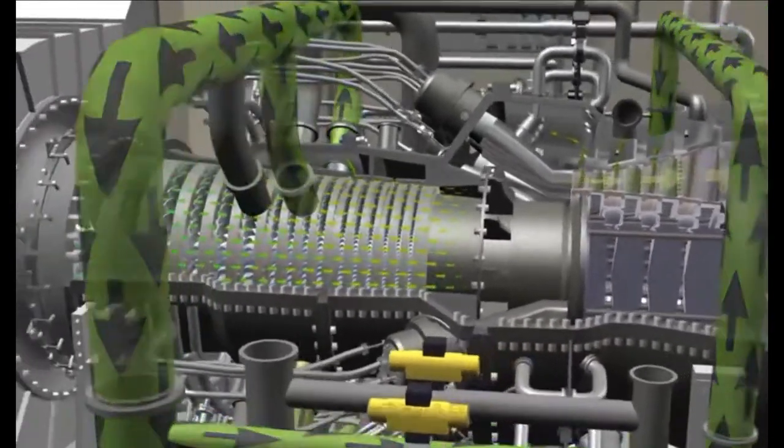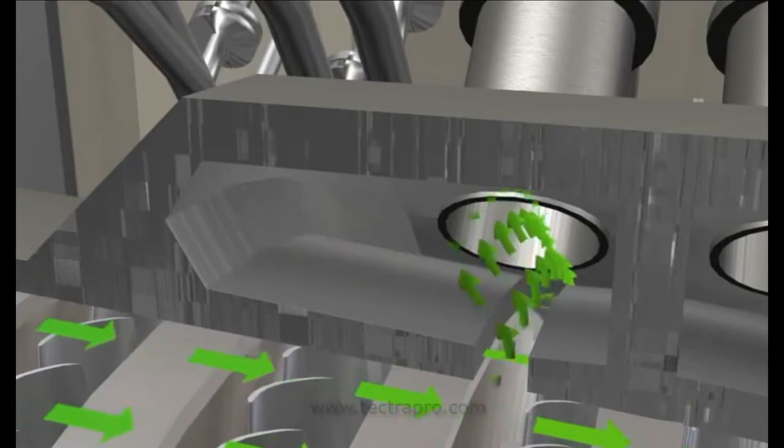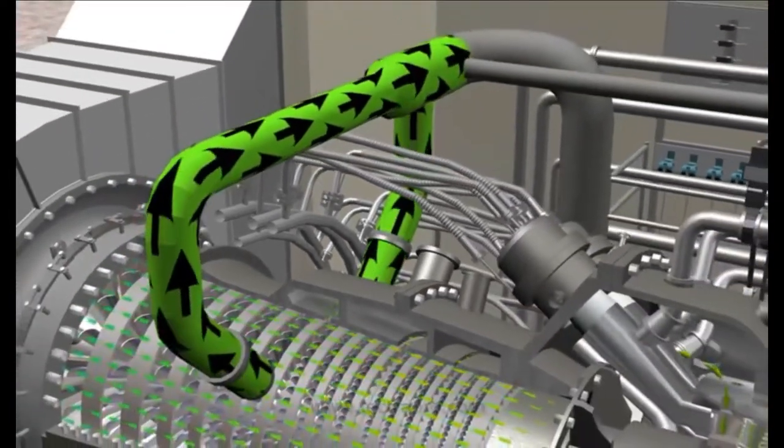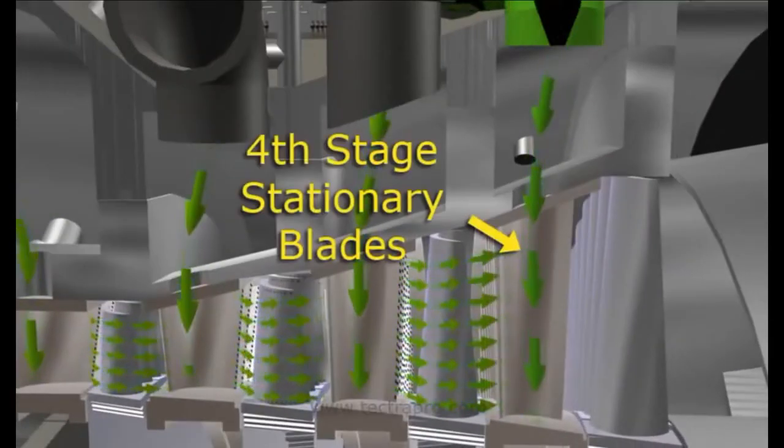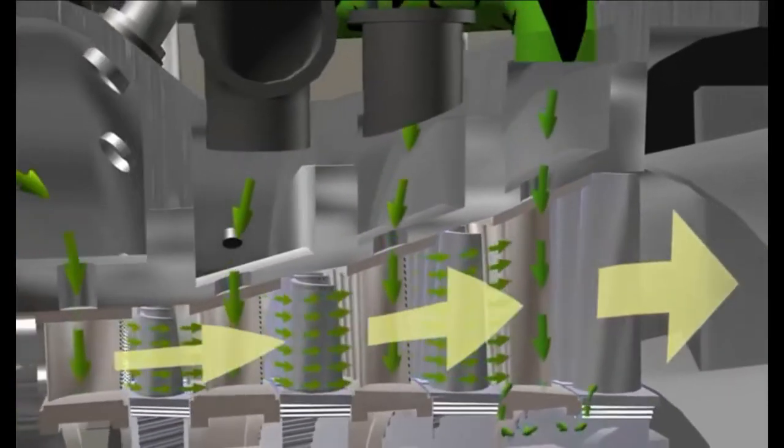The fourth stage stationary vanes are cooled from bleed air taken in from the sixth stage of compressor bleed air. Fourth stage air passes through the blade and into the ring segments and interstage seals the third stage vanes through the trailing levels to provide cooling flow.